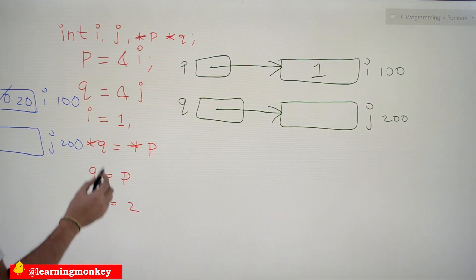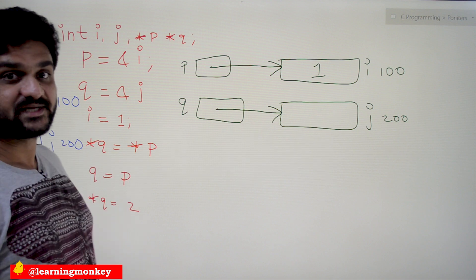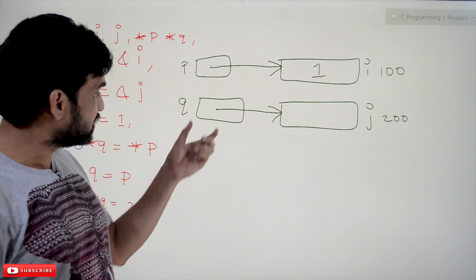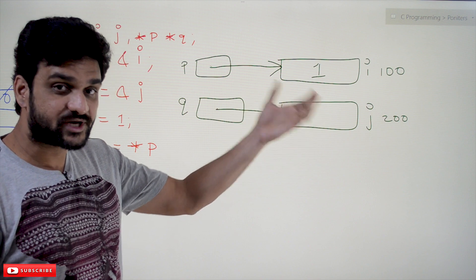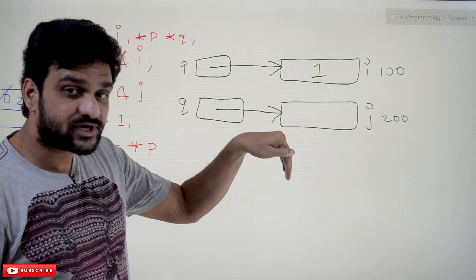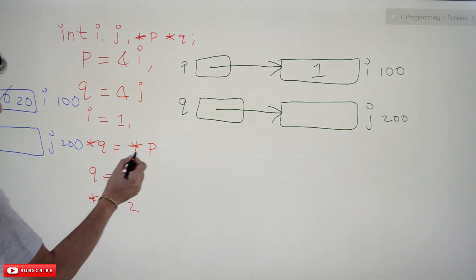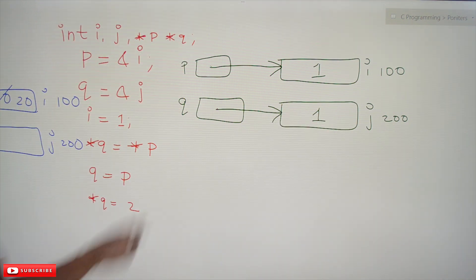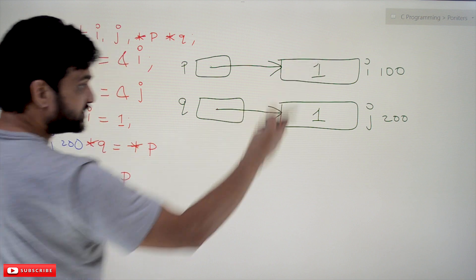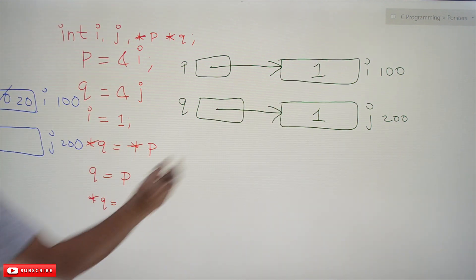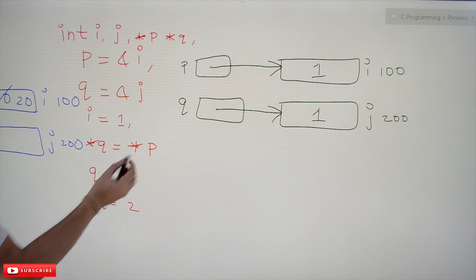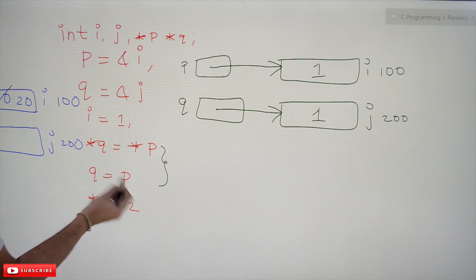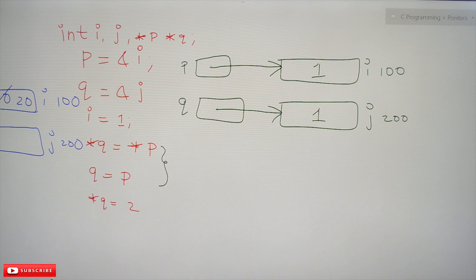Now *q = *p. The indirection operator *p gives the value at the location p points to, which is 1. So *q = *p means the value at q's location is also set to 1. Don't confuse *q = *p with q = p — these two are different: with the star operator, values are accessed; without it, memory locations (addresses) are accessed.